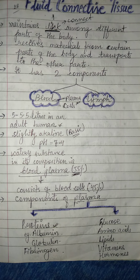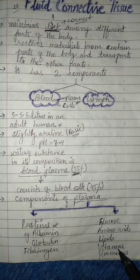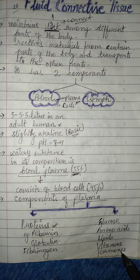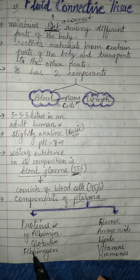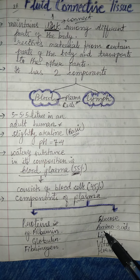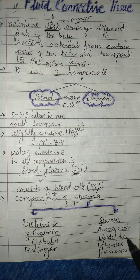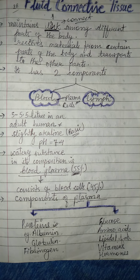When a foreign bacteria or virus enters the body, we start getting rashes or allergies or fever. This means there are certain proteins present in the blood that respond to such chemical or foreign agents. In addition to proteins, plasma also contains glucose, amino acids — which build proteins — lipids, which means fats, vitamins, and hormones. Hormones are certain chemicals present in our body.